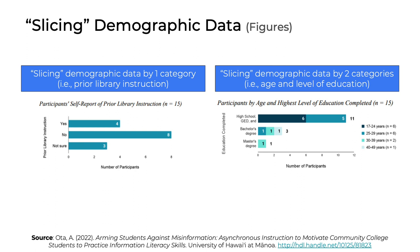This next example takes things further because it slices the demographic data by two categories. The chart is titled Participants by Age and Highest Level of Education Completed. Each horizontal bar tells us how many participants fell into a given age category, and within that category, what the highest level of education completed was. Color coding and a clearly labeled legend are important for more complex visualizations like this one, but it's a nice example of conveying a lot of information using a single figure.